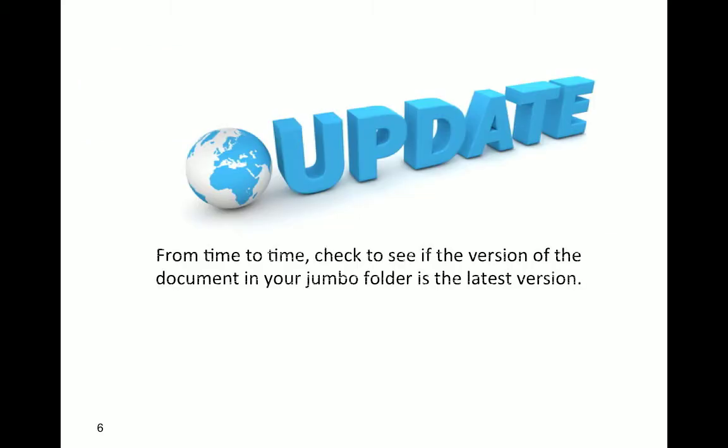Occasionally, check to see if the version of the document in your Jumbo folder is the latest version. On the bottom right-hand corner of every document, there'll be a little version number. When we put a new document up on the library, we change the version number so you can have a quick look and check that you've got the latest one.